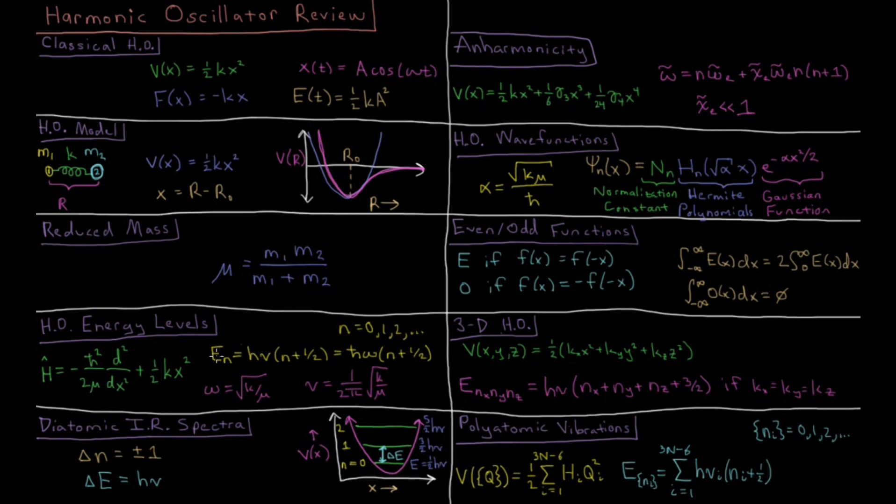When we solve H psi equals E psi, the Schrodinger equation for this, we get that our energy levels end up being evenly spaced. We have Planck's constant times the frequency times an integer n which starts at zero.